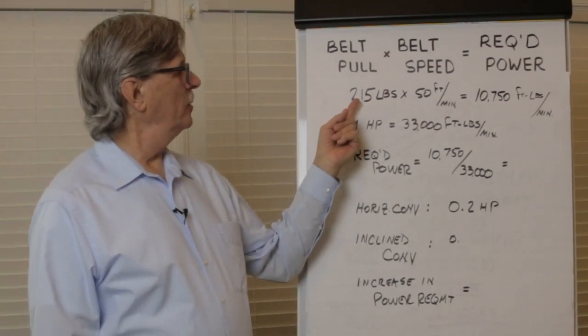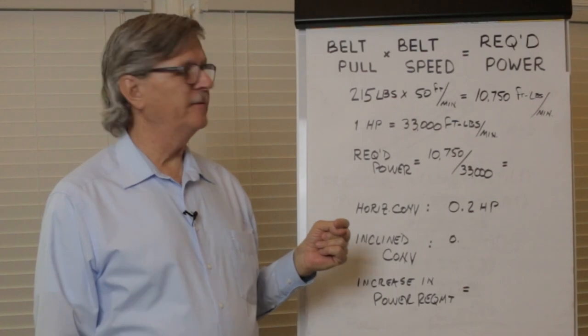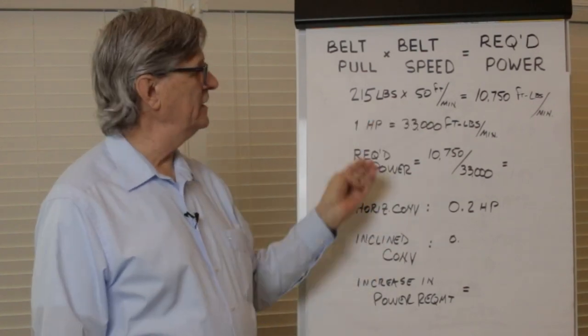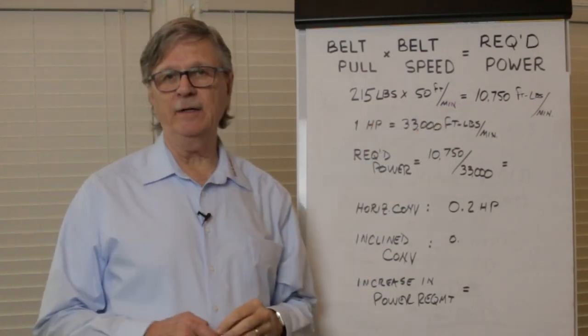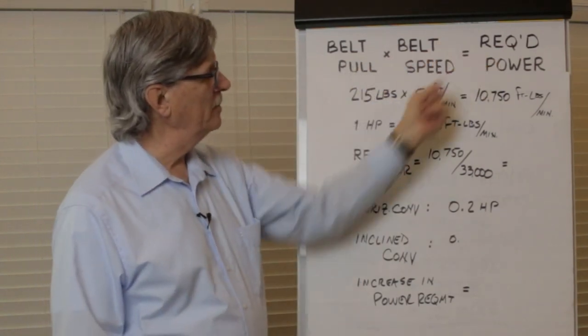We know total belt pull requirement is 215 pounds. We know the belt speed is 50 feet per minute. The product of these two numbers is 10,750 foot pounds per minute. Belt pull times belt speed equals required power.